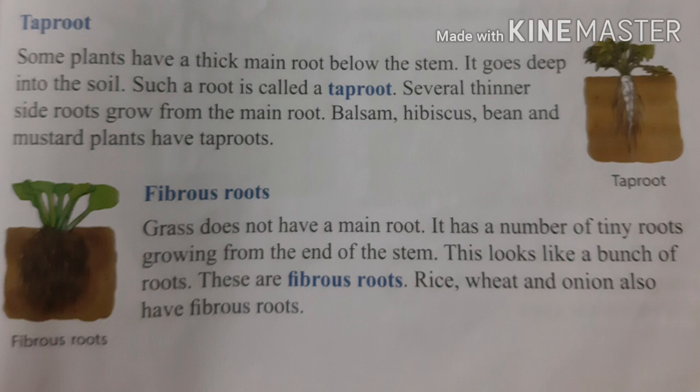Next is fibrous roots. Grass does not have a main root — it has a number of tiny roots growing from the end of the stem. This looks like a bunch of roots, and these are called fibrous roots. Rice, wheat, and onion also have fibrous roots.